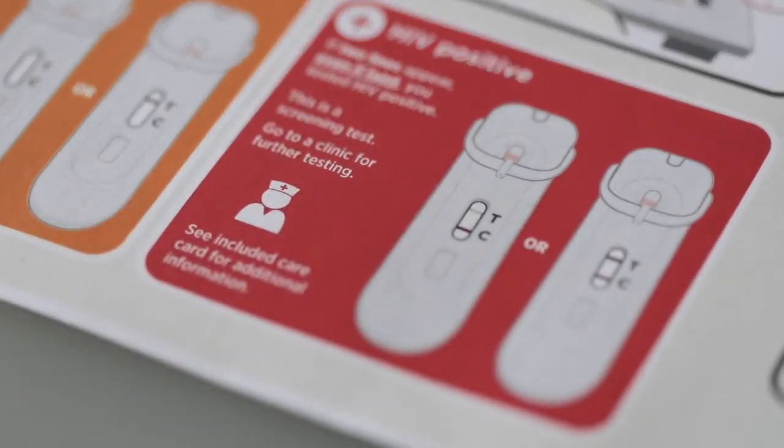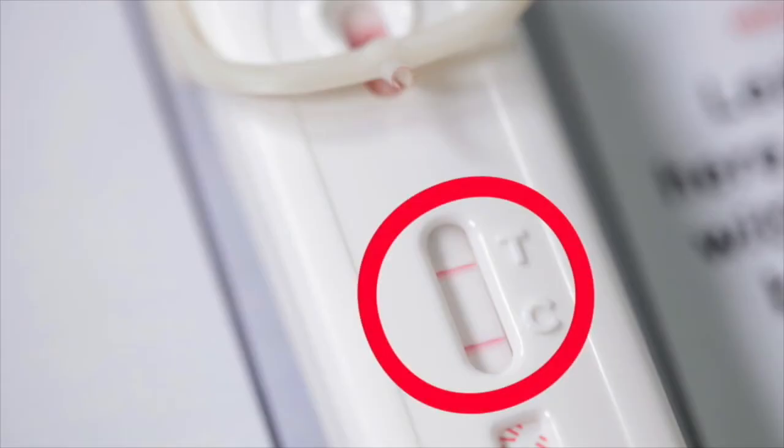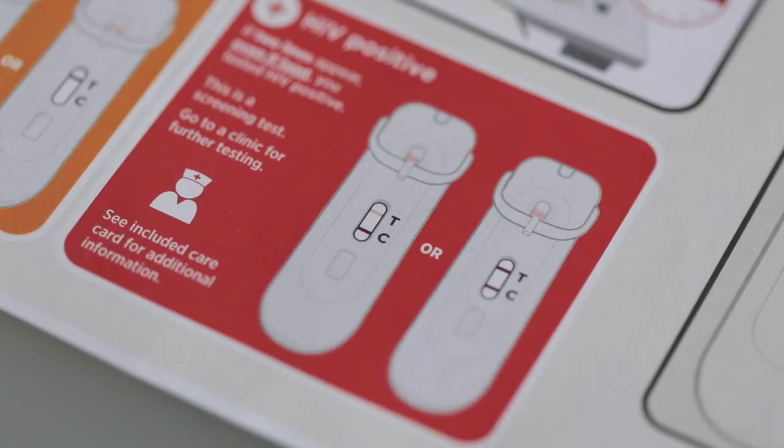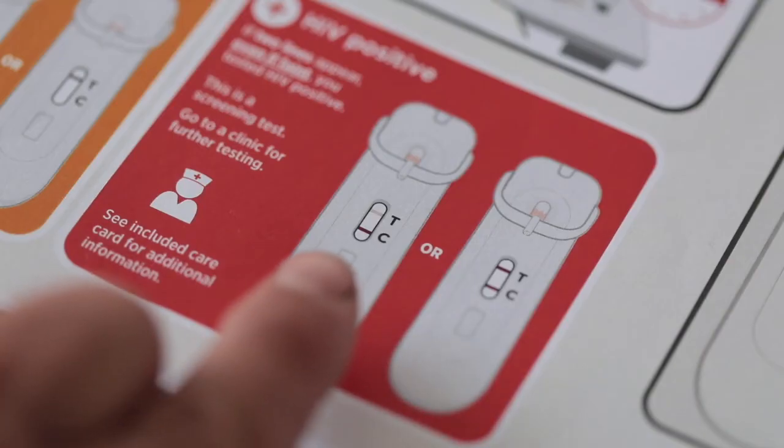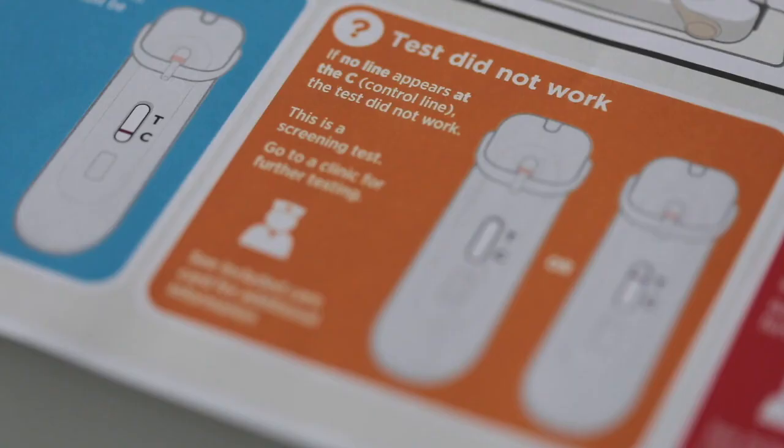Look in the red box called HIV positive. If a line appears next to the C and a line also appears next to the T, you have tested HIV positive, even if the line next to the T is faint. Because this is a screening test, it is important that you go to a clinic for further testing to confirm the result.